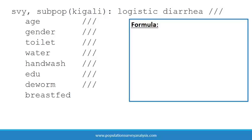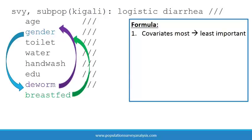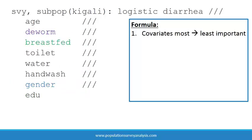Manual backward stepwise regression follows a formula. First, arrange all covariates from most to least important based on the conceptual framework. If there are covariates that must remain in the model regardless of their statistical significance — for example age or urban-rural residence — then put them at the top of the list.